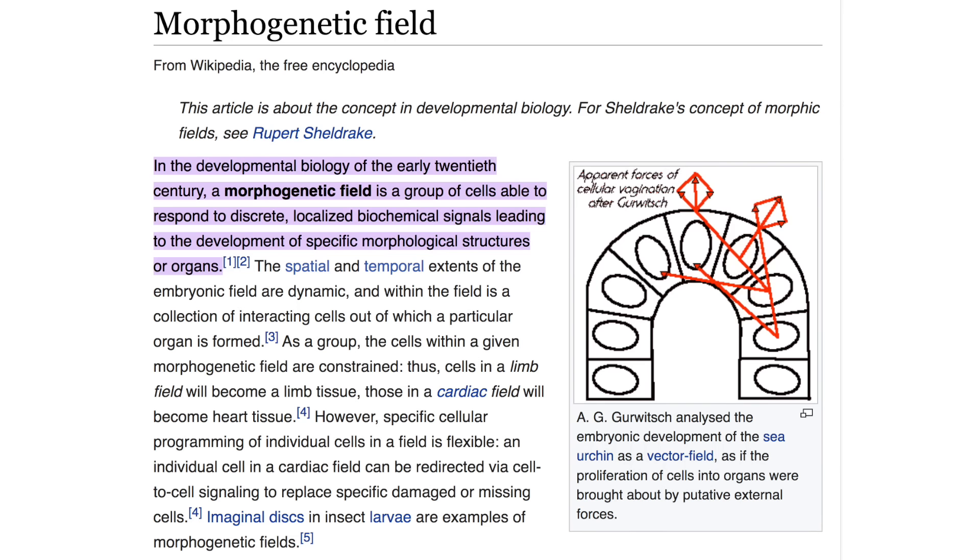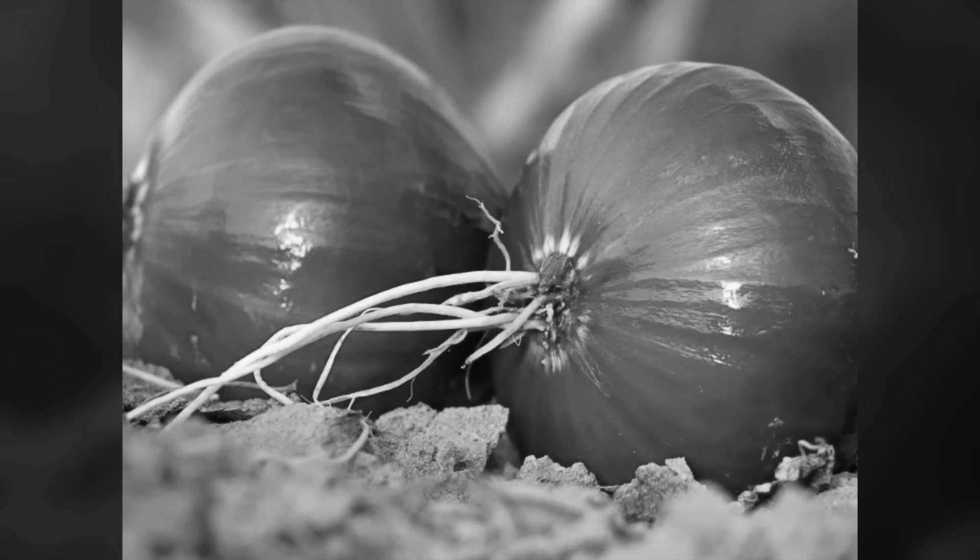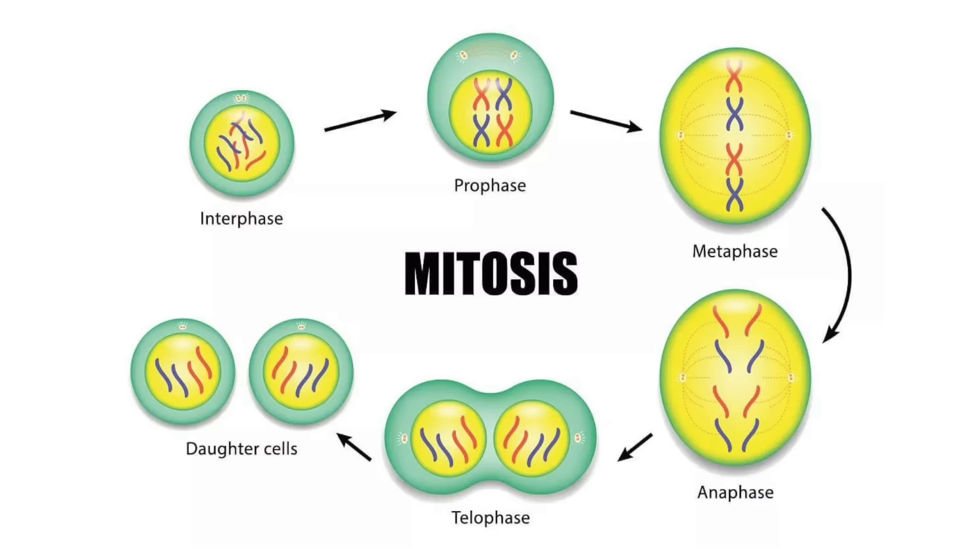In the early 1920s, Alexander Gurevich in Russia was experimentally exploring the idea that all life emits and is embedded in a morphogenic field. At one point, he took two onions out of the ground, careful to preserve their root tips, because the root tip has the highest rate of mitosis. The cells are dividing fastest at the tip.